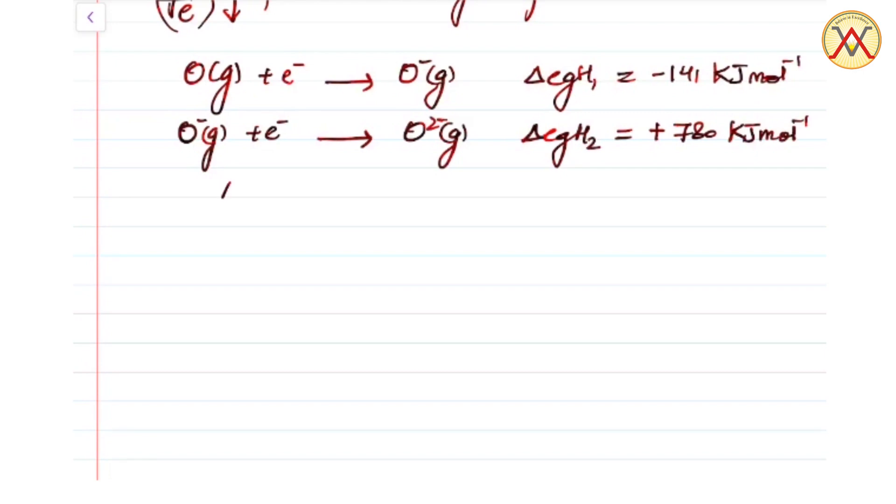So net electron gain enthalpy is greater than zero for multi-charge anion.